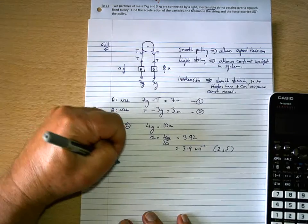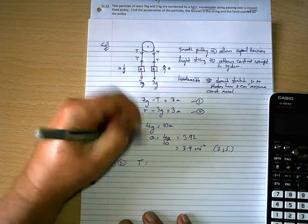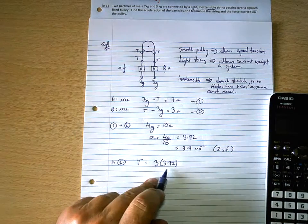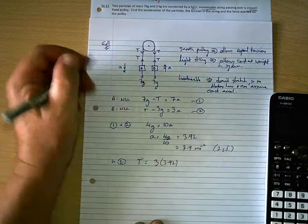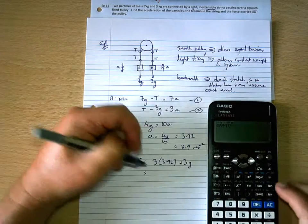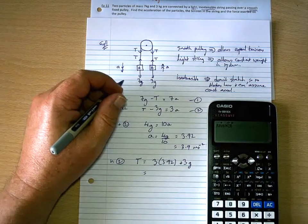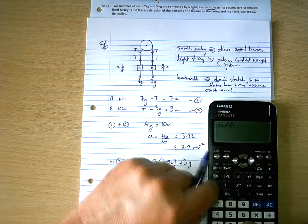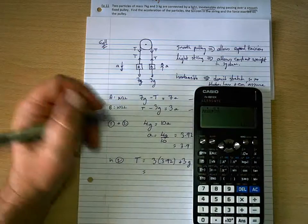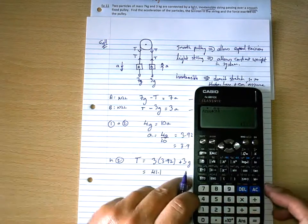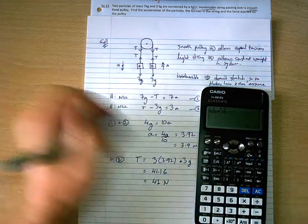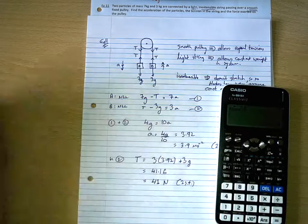The tension we'll get from equation 2. So, in 2, T will be 3a. Remember, we don't use the rounded value when we're performing the calculation. So, that would be 3 lots of 3a plus 3g. So, 3.92 times 3 equals that, plus 3a equals 41.16. Which, to 2 significant figures, is 41 newtons, 2sf.